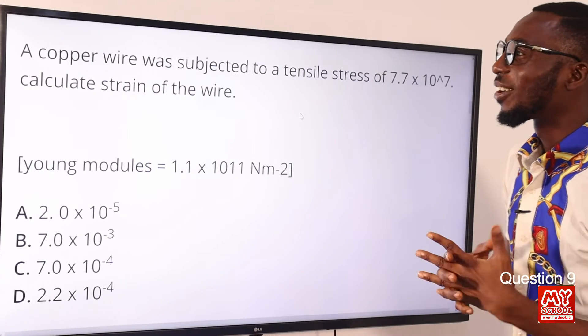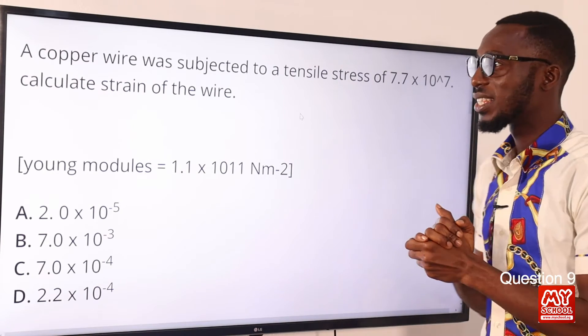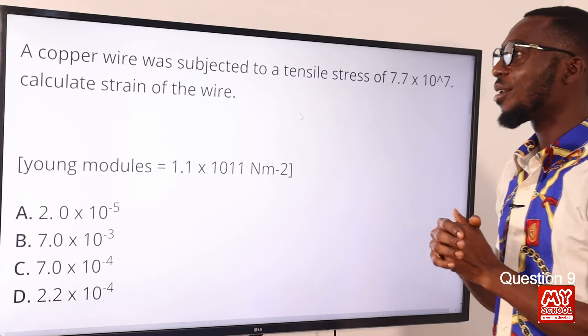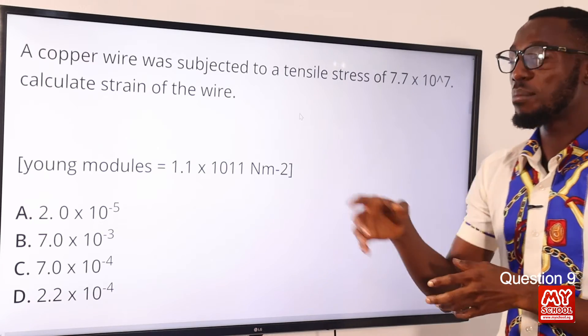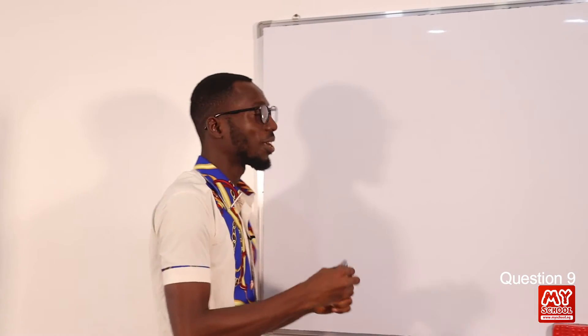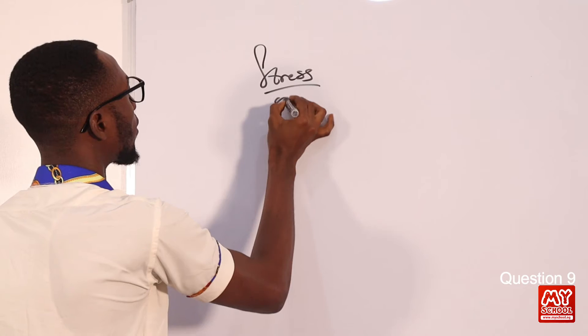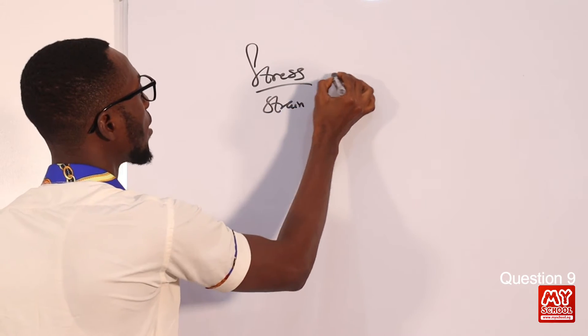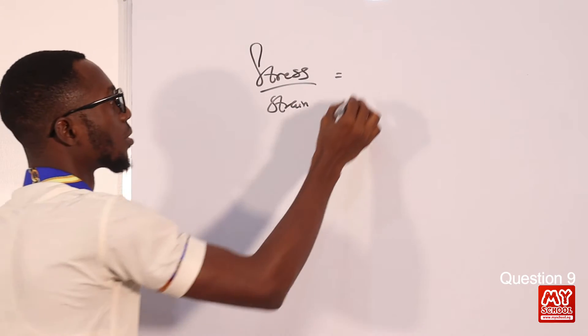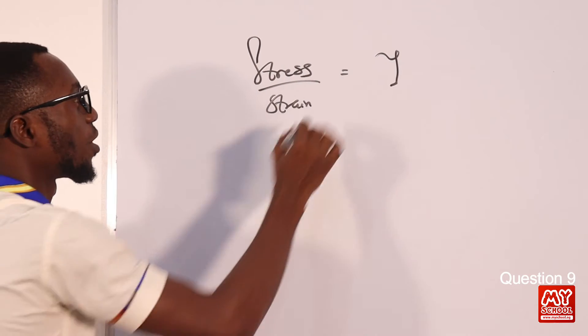Question 9. A copper wire was subjected to a tensile stress of 7.7 times 10⁷. Calculate the strain of the wire. So we have Young modulus equals tensile stress over strain. So stress over strain, then we have it equal to Young modulus. So we are asked to look for strain. What do we do? We cross multiply.